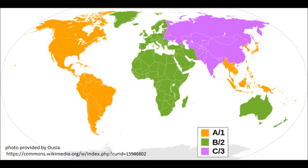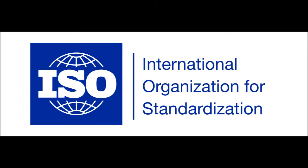To tighten the region code restriction scheme, a new process was added to ensure discs only play in their designated region and country. When Blu-ray players verify the region code, they also must verify the country code on the disc. For example, the United States country code is 21843, according to ISO 3166-1, published by the International Organization for Standardization. Any Blu-ray played in the United States must have Region A and country code 21843 encoded on the disc, to ensure it is only played in the US and not in East Asia, even though they are in the same region.